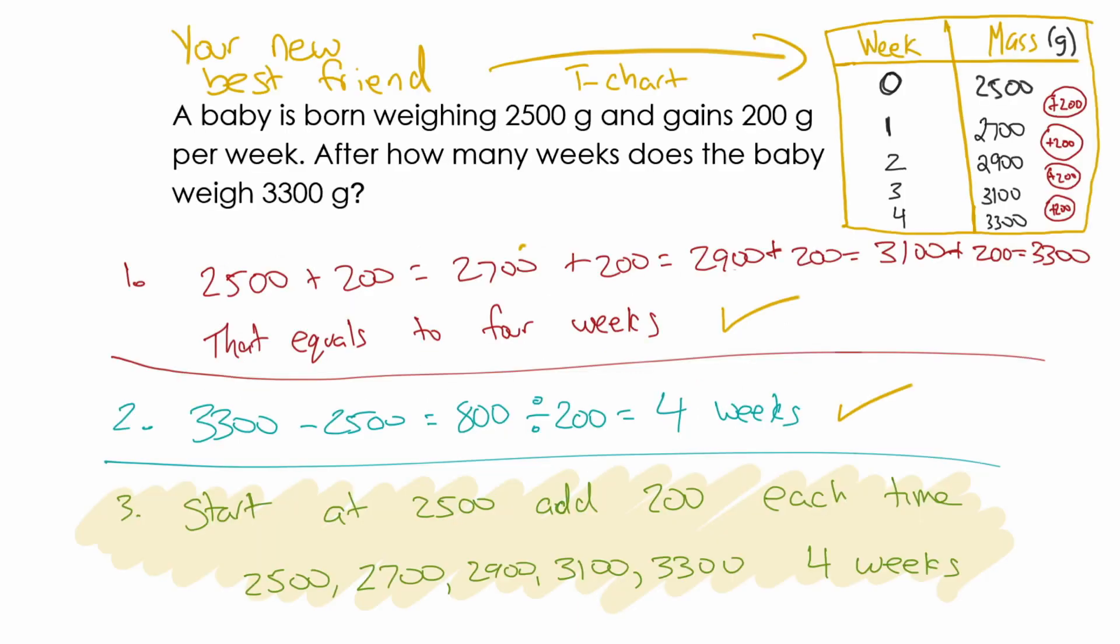So here's an example we did in class. A baby is born weighing 2,500 grams and gains 200 grams per week. After how many weeks does the baby weigh 3,300 grams? So here are three strategies used in class. Start at 2,500. Add 200. That gives you 2,700. Add 200 and so on until you got 3,300. So that equals four weeks. This next group did something interesting. They took the final weight and they subtracted it by the starting weight, which is 800. So the difference is 800 grams. If each week it's going up by 200 grams, they divided it and they got four weeks. That's a great way to do it.